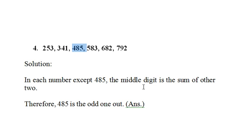In each number except 485, the middle digit is the sum of the other two - the sum of first and last digit. Therefore, 485 is the odd one out.